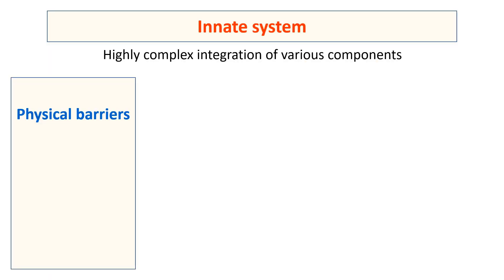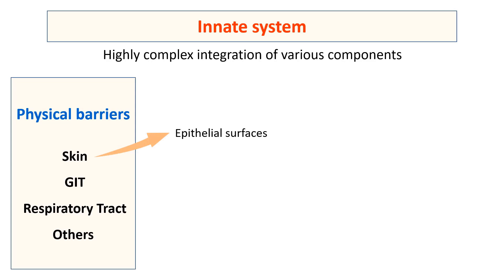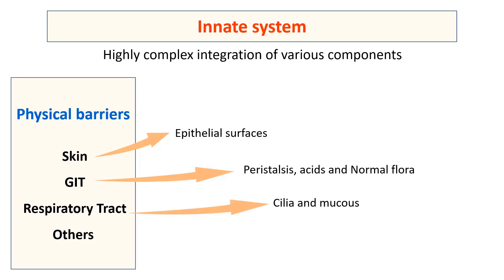The physical barriers include the skin with its epithelial surfaces, the gastrointestinal tract with various defense mechanisms such as peristalsis, gastric acid production, and normal flora, as well as the respiratory tract with its cilia and mucus, and many other components such as tears and saliva.